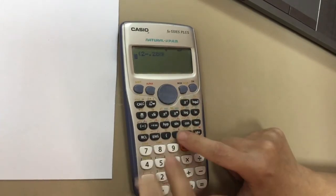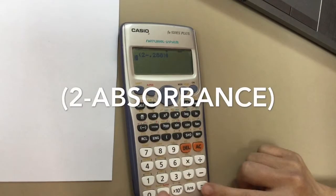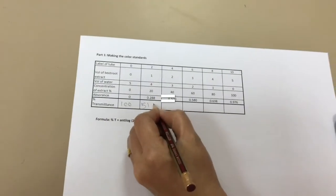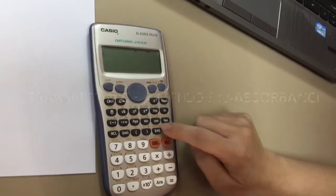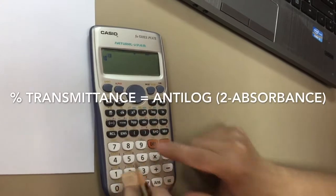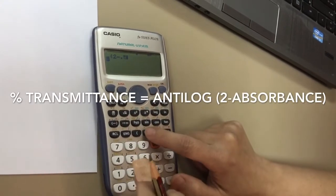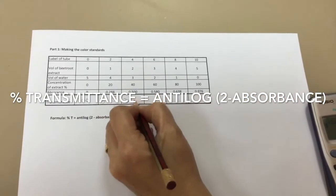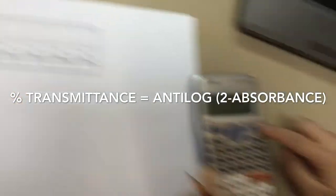However, for our calibration curve we want to plot percentage transmission against concentration of ethanol. So to do that we need to use a formula. And the formula to convert absorbance into percentage transmission is to say the antilog of 2 minus the absorbance.